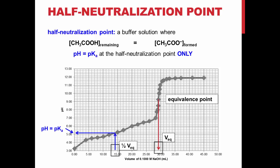Experimentally, this point is found by dividing the volume of the titrant required to reach the equivalence point in half to find the half-neutralization point, and interpolating the graph to the pH at that volume.